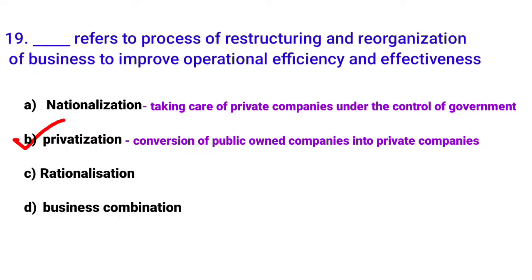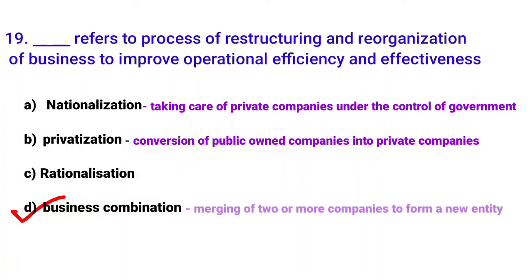Option D: business combination — two or more companies merging — that is not the answer either. So the correct answer is option C: rationalization — restructuring and reorganizing business to improve operational efficiency.